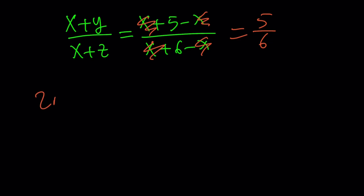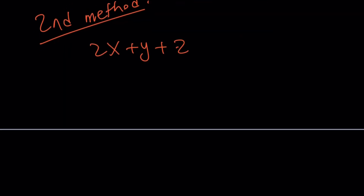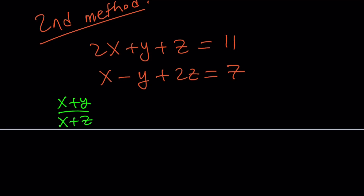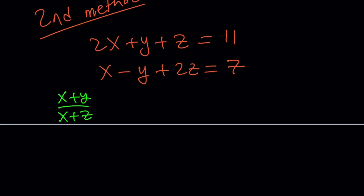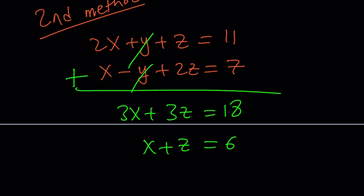Now let's look at the second method. Let's rewrite the system: 2x plus y plus z equals 11, and x minus y plus 2z equals 7. By the way, there's probably a geometric interpretation since these two are planes in 3D, and they intersect, and x plus y over x plus z must represent something since it's a constant. Now, instead of getting rid of x, I want to get rid of y — because that's going to give me x plus z directly. Adding the two equations, y cancels, giving 3x plus 3z equals 18. Divide by 3: x plus z equals 6.